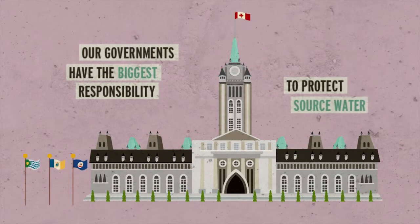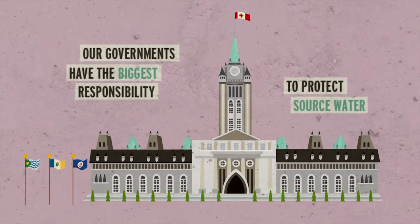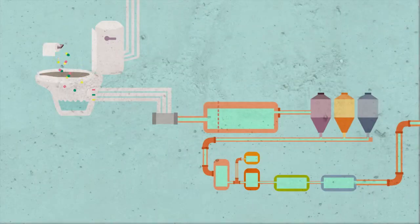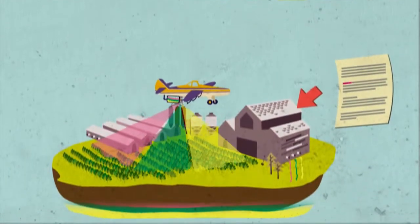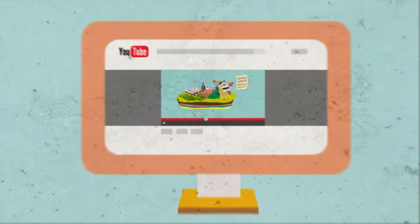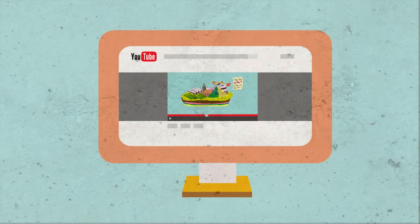Our governments have the biggest responsibility to protect source water. How? By identifying threats, restricting industrial activities in certain areas, and promoting awareness around source water protection.